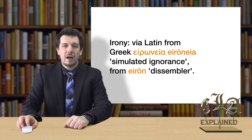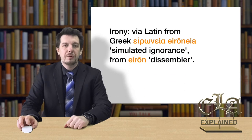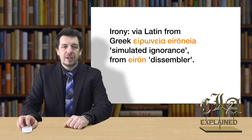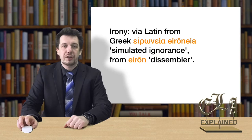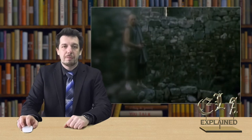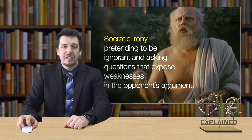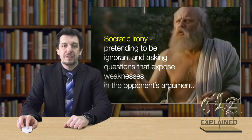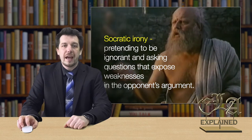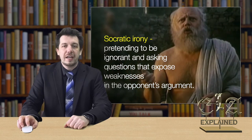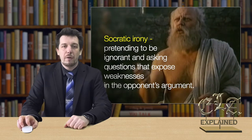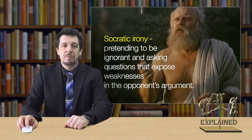The word irony comes from ancient Greek. Greek philosophers used this term to describe a rhetorical strategy whereby the speaker made statements that did not reflect what he or she actually thought or wanted to say. Socratic irony, for example, involved the speaker pretending to be ignorant about an issue and asking questions in order to clarify the situation. These carefully chosen questions led his or her opponents to absurd conclusions and often made people reconsider their original point of view.